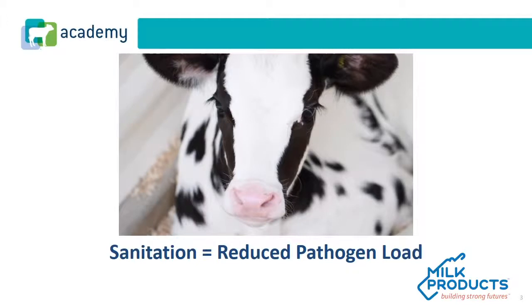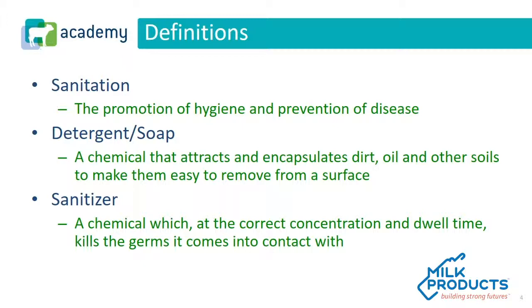Sanitation is really about reducing the pathogen load, and one way we can think of sanitation is cleaning and disinfection. Sanitation in general is the promotion of hygiene and the prevention of disease. Detergent or soap is a chemical that attracts and encapsulates dirt, oil, or other soils, making it easy to remove those substances from the surface of a bottle, pail, or other instrument. A sanitizer is another type of chemical used on a surface that kills the germs it comes in contact with — the types of germs left after we use detergent or soap.